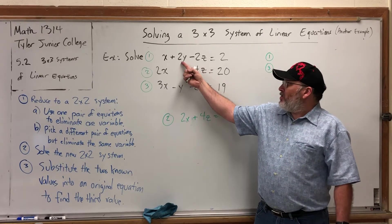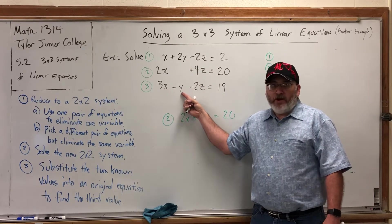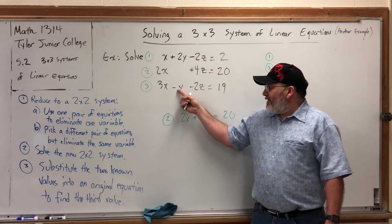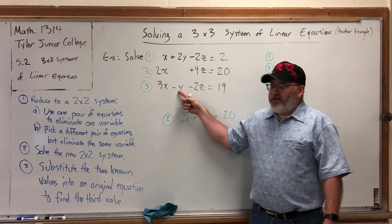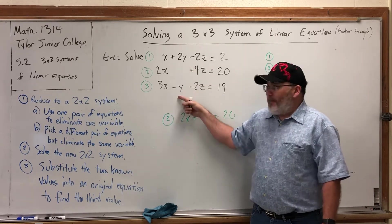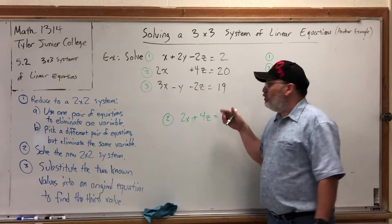Let's think about how to set this up. In equation 1, the coefficient of y is positive 2. In equation 3, the coefficient of y is negative 1. If the third equation's coefficient of y was negative 2, these would be an opposite pair. I can make a negative 2 appear here if I multiply the entire equation by 2.